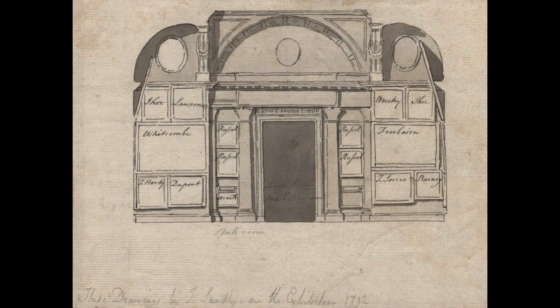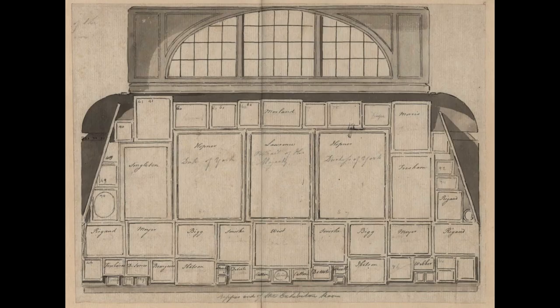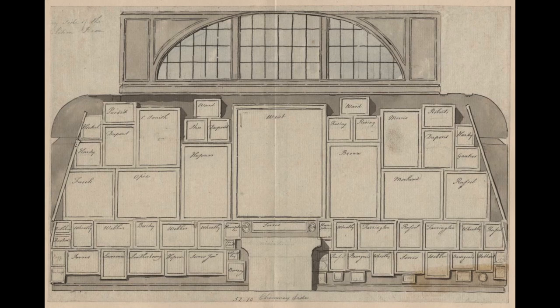Samby's drawings help us imagine walking through that doorway and turning around to look at the gathering of pictures on the room's west wall. He rigorously maps out the symmetrical assemblage of works on this wall, which was structured by the famous moulding, known as the Line, that ran around the entire room just above the level of the door. He also draws the north wall, surmounted by the great curved windows that allowed natural light into the room, and the east wall, which featured a fireplace at its centre. Samby's finished study of the south wall, if it was ever produced, seems to have been lost.